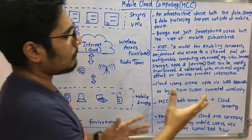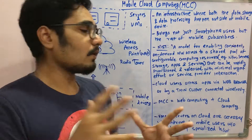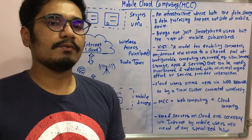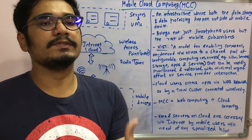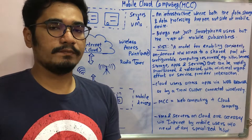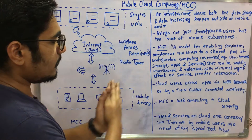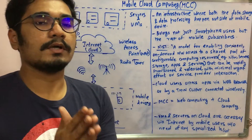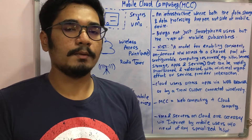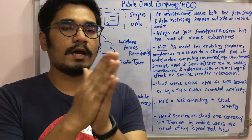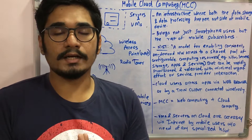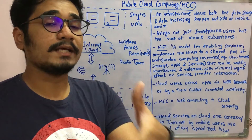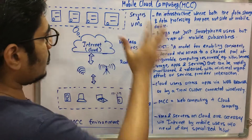Cloud users access apps with the help of a web browser, or they access them by means of a thin client connected wirelessly — via WiFi, NFC, or Bluetooth — to services hosted remotely. MCC takes advantage of and combines two technologies: web computing and cloud computing. Cloud computing has many advantages like grid computing and its own architecture — SOA, that is Service Oriented Architecture. MCC is built over both web computing and cloud computing.